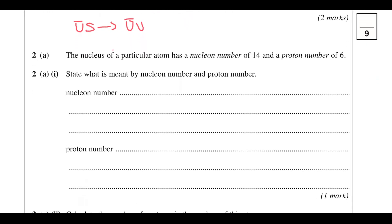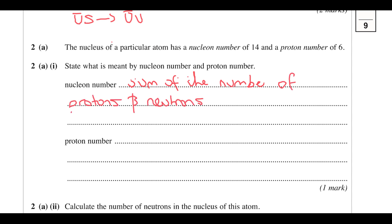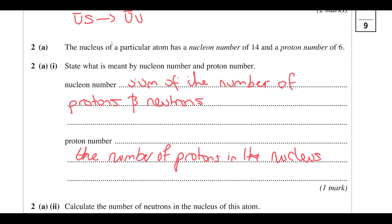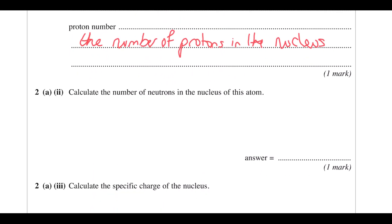The nucleus of a carbon atom has a nucleon number of 14 and a proton number of 6. What is meant by the nucleon number and the proton number? The nucleon number is essentially the sum of the number of protons and neutrons. The proton number is just the number of protons, also known as the atomic number. This question seems fairly obvious — it's only worth one mark for the whole thing.